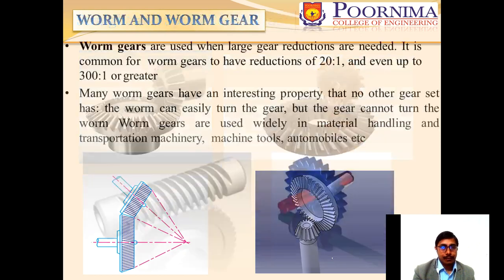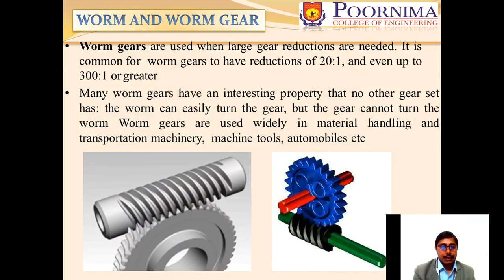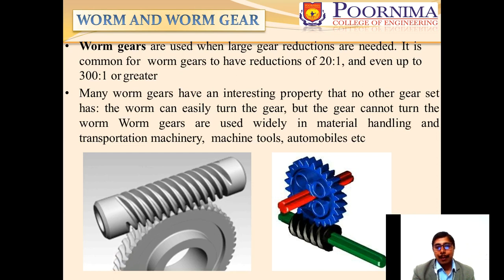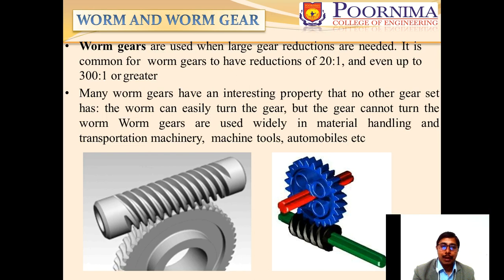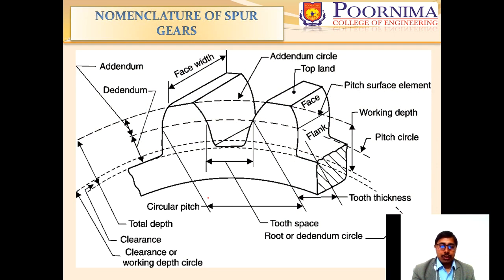The worm and worm gear is the best choice for a compact transmission layout. Its most interesting property — not found in any other gear set — is that the worm can easily turn the gear, but the gear cannot turn the worm. This is the main advantage of the worm gear. Worm gears are widely used in material handling and transportation machinery, machine tools, and automobiles.